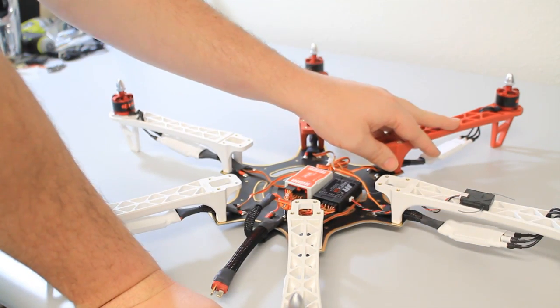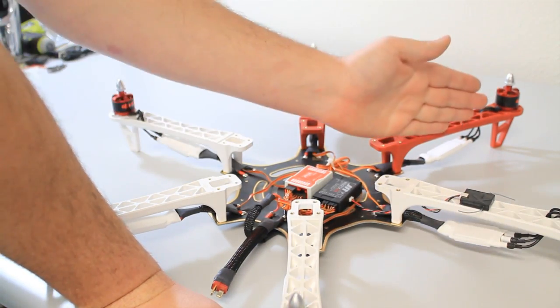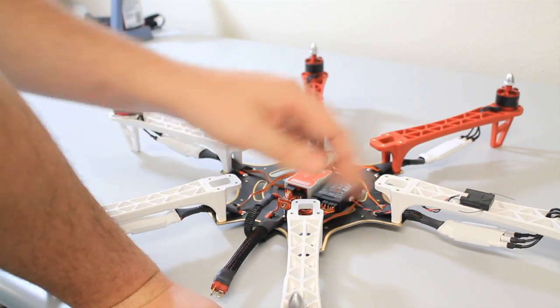So we went ahead and mounted all those. We have motor one is the first arm on the right, motor two, three, four, five, and six. Plug those in accordingly.